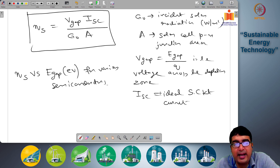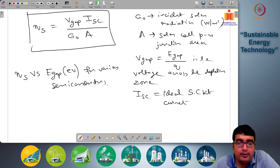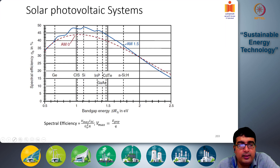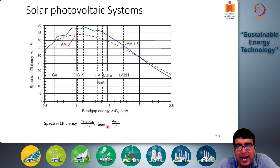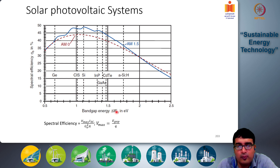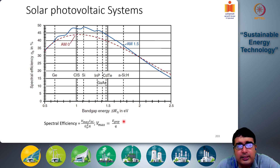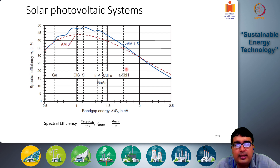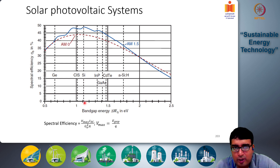Different semiconductors will have different band gap energies, which is also equal to the voltage across the depletion zone. This is seen in the figure, which represents spectral efficiency eta_s in percentage and band gap energy W_g in electron volts. For silicon, the band gap energy is 1.1 electron volts.